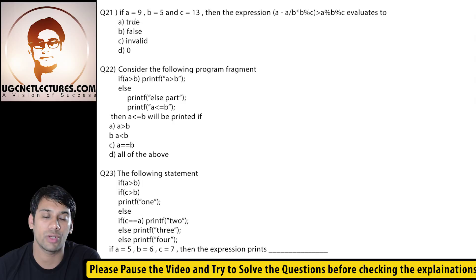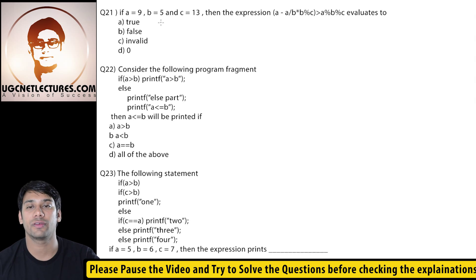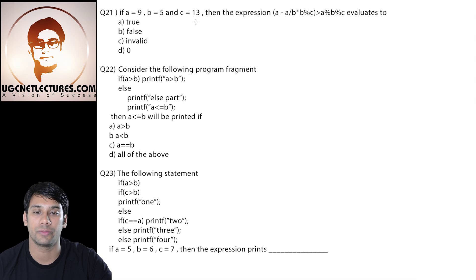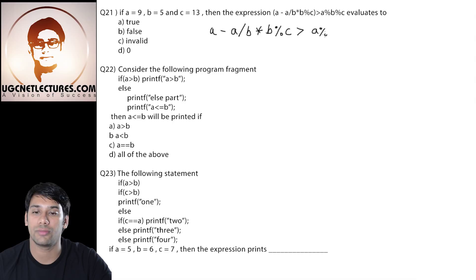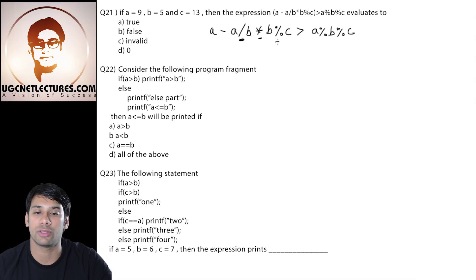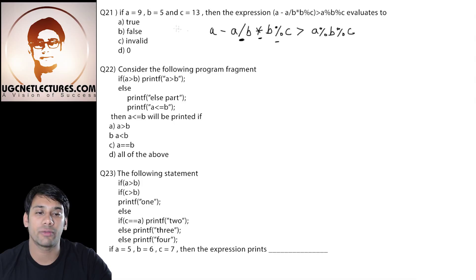Now we are at question number 21. The value stored in variable A is 9, which is an integer. The value stored in variable B is 5, also an integer. The value stored in variable C is 13, also an integer. Then we are having this expression: A minus A divided by B multiplied by B modulus C is greater than A modulus B modulus C. The precedence of multiplication, division and modulus are all the same, and they are calculated from left to right. So initially with A being 9, this statement is now 9 divided by 5 multiplied by B modulus C.